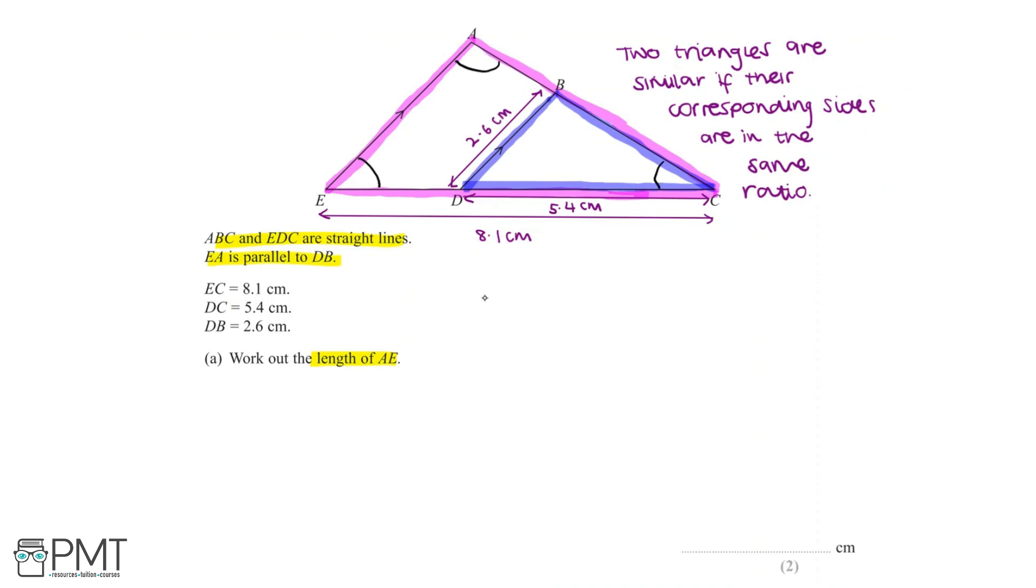On triangle AEC, we can call this angle 1, this angle 2, and this angle 3. And on triangle BCD, we'll call the corresponding angles the same. So angle 1 can be over here, angle 2 over here, and finally angle 3.